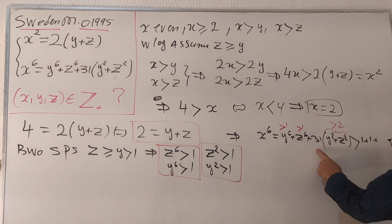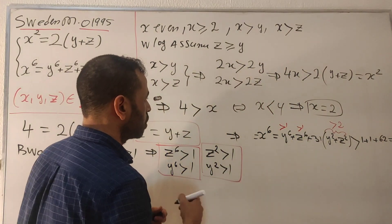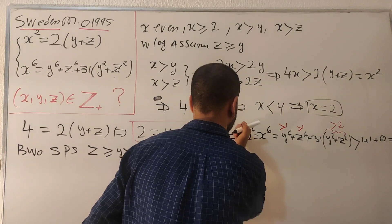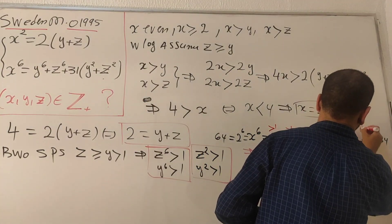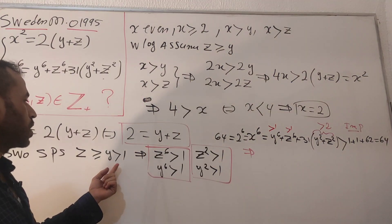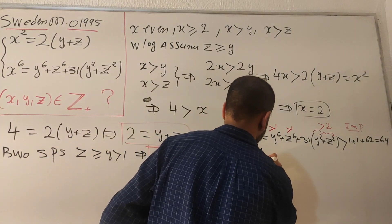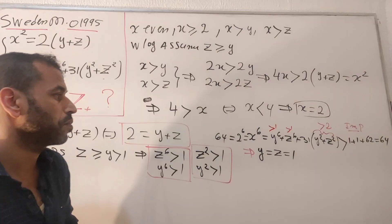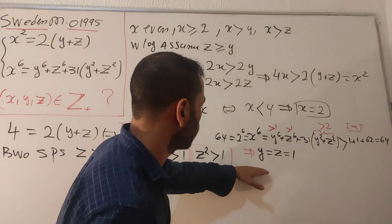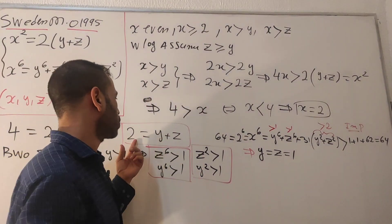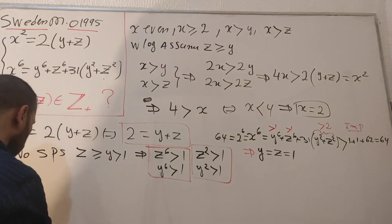So the right-hand side is strictly greater than 1 + 1 + 31 times 2 = 64. But x = 2, so x to the 6 = 64. This gives 64 strictly greater than 64, which is impossible — a contradiction. Therefore y cannot be strictly greater than 1, which means y = 1 and z = 1. This is consistent with y + z = 2.